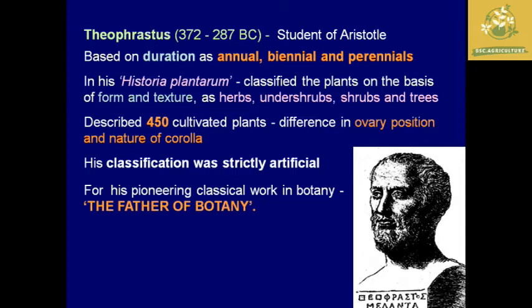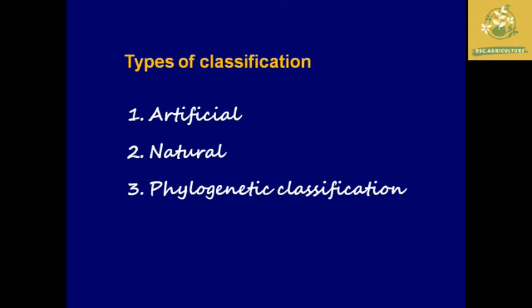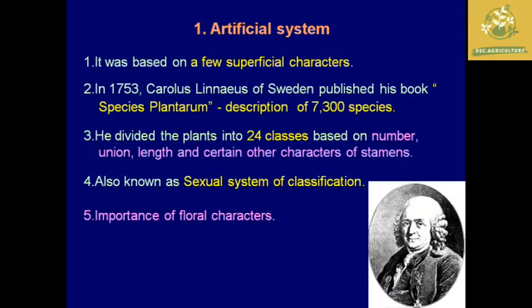Theophrastus used to describe about 450 cultivated plants, including the ovary portion and nature of corolla, in his Historia Plantarum. Because of this work, he was known as the father of botany. His classification was mainly artificial. Now moving on to the types of classification: plants are classified into three different types — the first is artificial, the second is natural, and the third is phylogenetic classification.